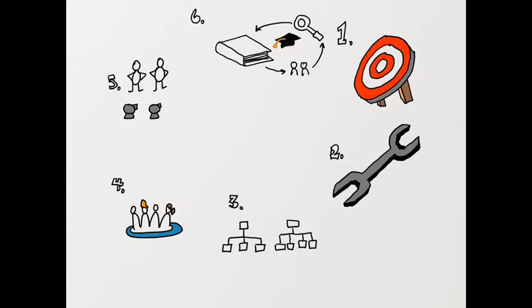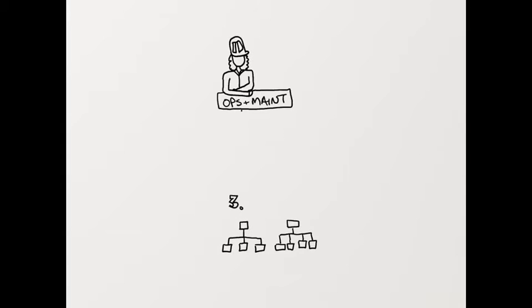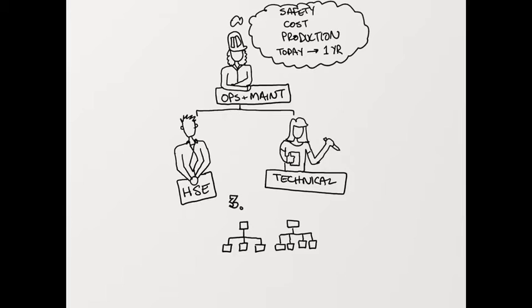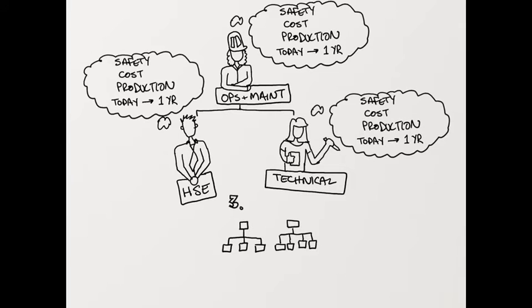Functional decentralization. In an operation, commonly we have an ops manager who looks after the running of the plant. They have annual targets for safety, production, and cost, and a team to help deliver. If the safety and engineering resources report to the ops manager, they're naturally going to help out with these targets, with a focus on their area of expertise.